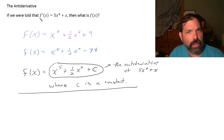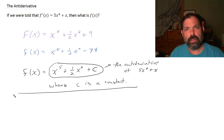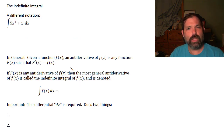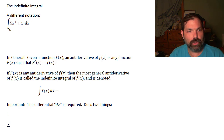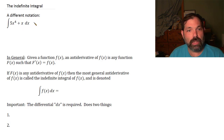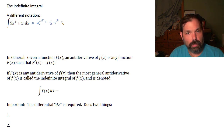So if we're given the derivative, we can find its antiderivative. We have a special symbol for this concept — the indefinite integral. We'll talk about the definite integral later. The notation is: the integral of 5x to the fourth plus x dx equals x to the fifth plus one half x squared plus c. That dx is important and we'll talk about it in a moment.